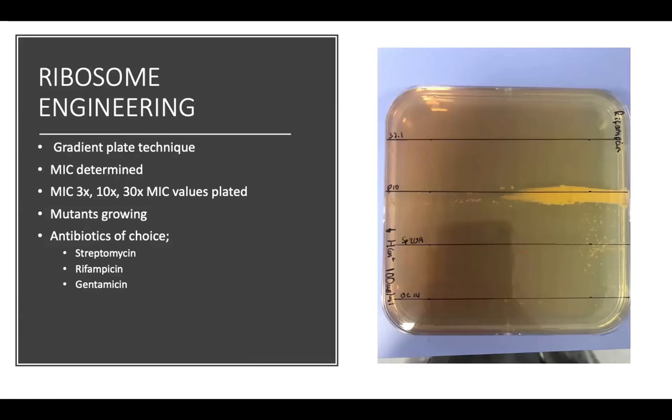Therefore, in an attempt to increase or trigger larger zones of inhibition, ribosome engineering was employed. Antibiotic gradient plates from 0 to 100 micrograms per ml were created and the Streptomyces isolates were streaked across the plate. Once inoculated, the plate was left to incubate until the control plate without antibiotics had formed a fully confluent line across the agar. At this point, an estimation of the MIC was determined.